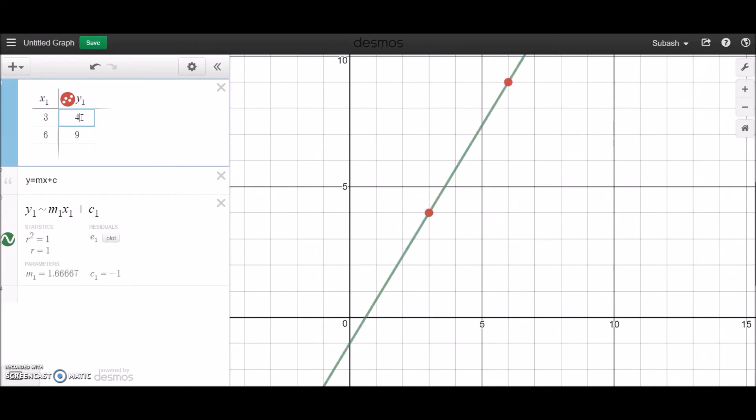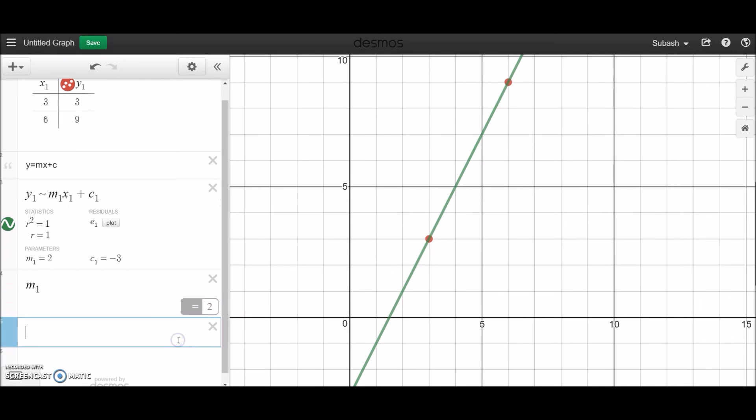Then of course the gradient actually changes as well. The other thing that you could also do is right now these variables are actually stored in. For example, m₁ is always going to equal 2 and c₁ is equal to -3 in this calculator.